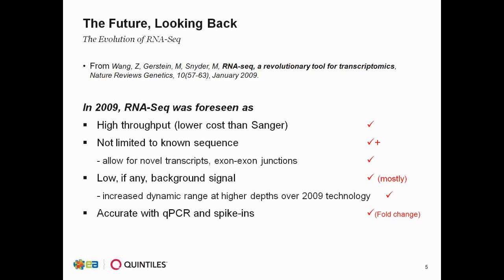In general, RNA-Seq has low if any background signal, especially for protocols such as PolyA. Occasionally, for other protocols where you're depleting ribosomal RNA, there is a possibility for background signal. But for the most part, RNA-Seq generally has very low background and therefore increased dynamic range over the technologies that were around in 2009. And related to accuracy with qPCR, it certainly is accurate in terms of estimating fold change, though whether you get the same numbers in terms of absolute quantity is actually one of the items I'll speak to later.